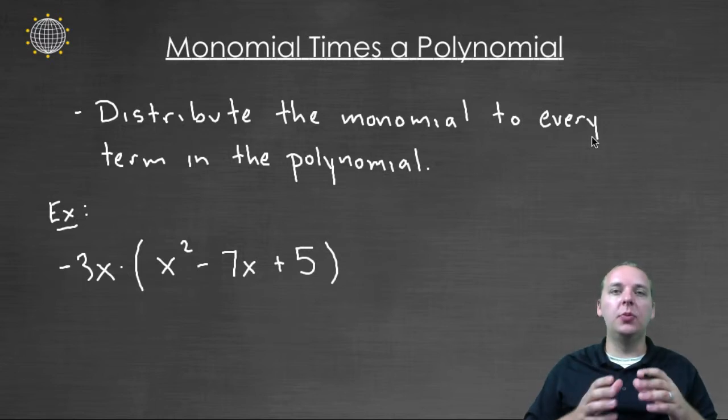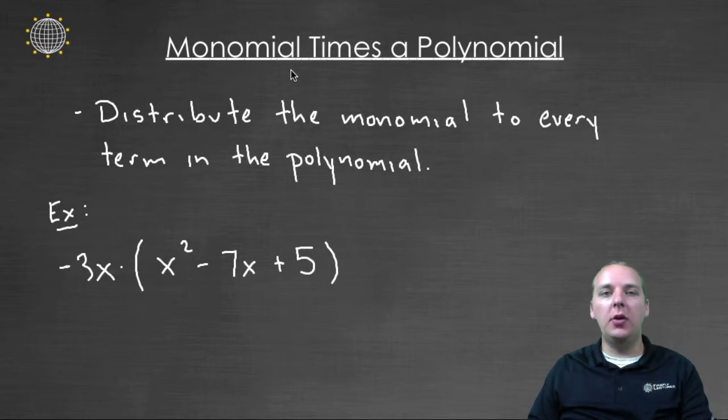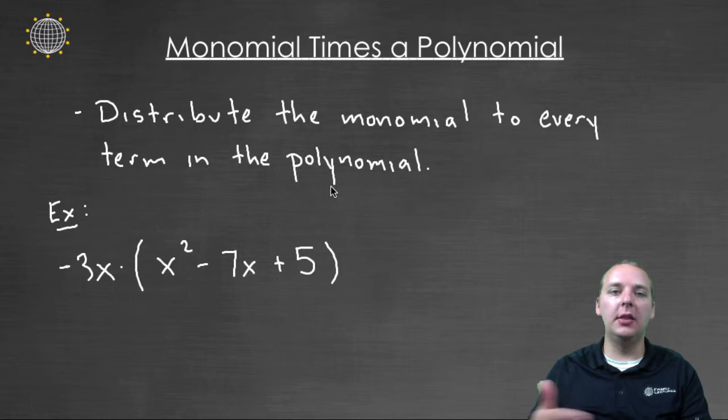So we're going to start actually with just a monomial times a polynomial. And we'll look at some of the other cases in some of the later videos. So if you have a monomial, which is just a single term times some generic polynomial, what we're going to do is distribute that monomial to every term in the polynomial.